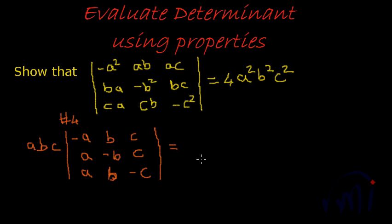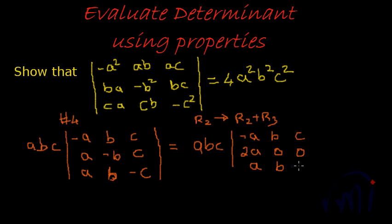If we add these two, that is we use property 6 and then say row 2 becomes row 2 plus row 3, this determinant becomes a, b, c which is a common outside minus a. Row 1, we are not changing anything, b, c and this becomes this plus this. So 2a minus b plus b is 0, plus c minus c is 0. So we got a lot of zeros here. It should be easy to expand the determinant.